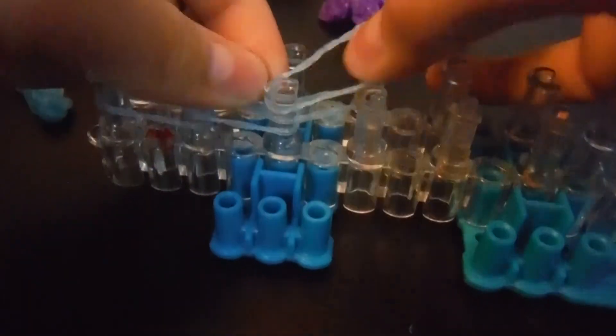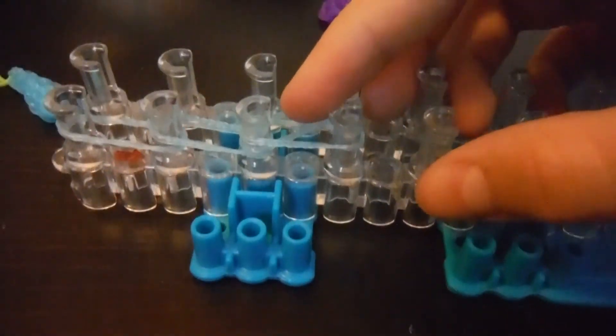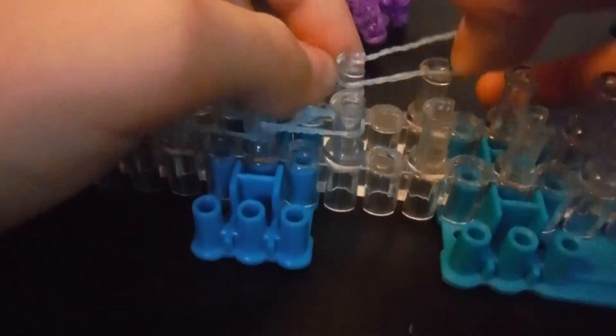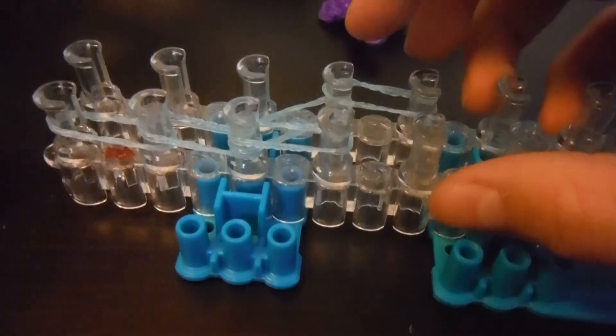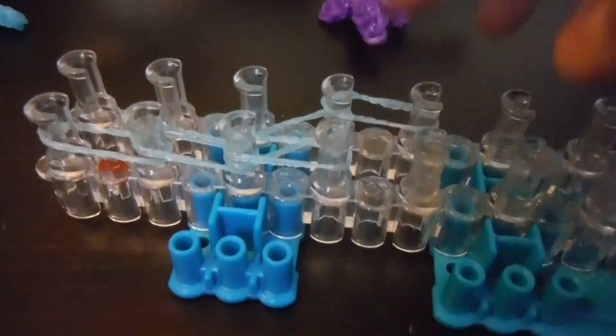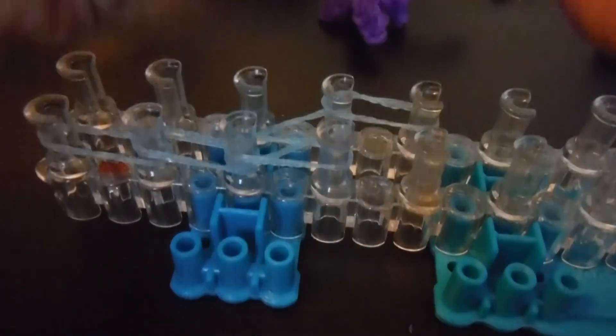And then what you want to do is split it off. If you are doing a normal color, if you're doing like a purple and gray scroll, what you want to do is put a purple here, put a purple one here. But I am not going to.